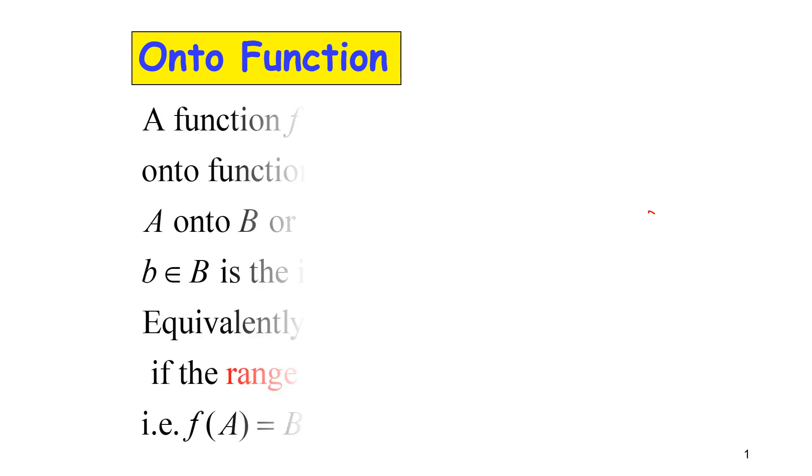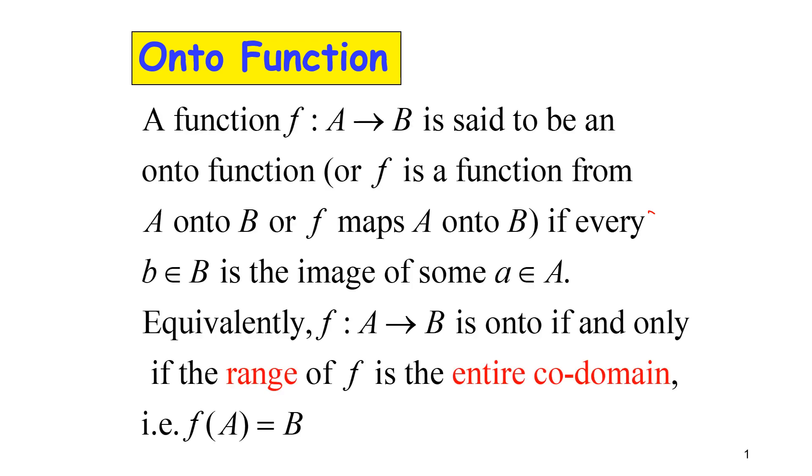Onto Function. A function f from A to B is said to be an onto function, or f is a function from A onto B, or f maps A onto B.